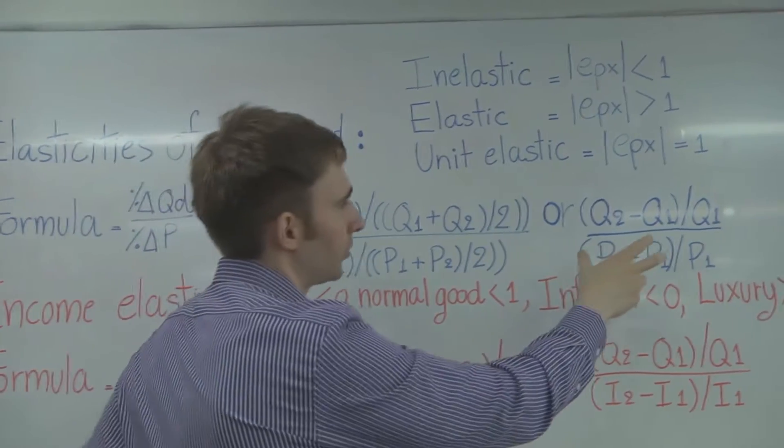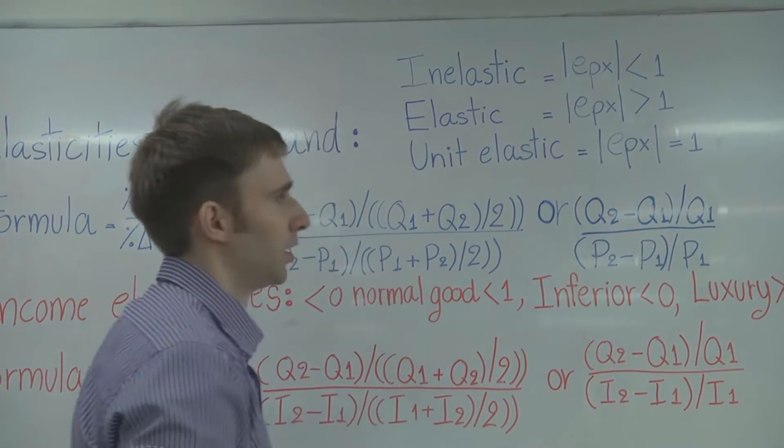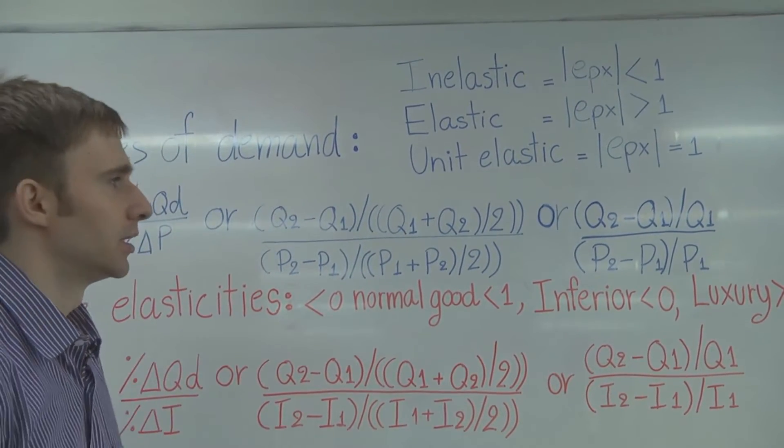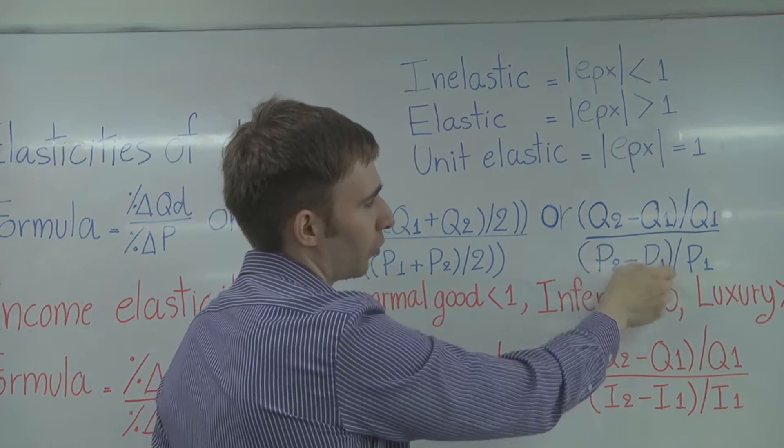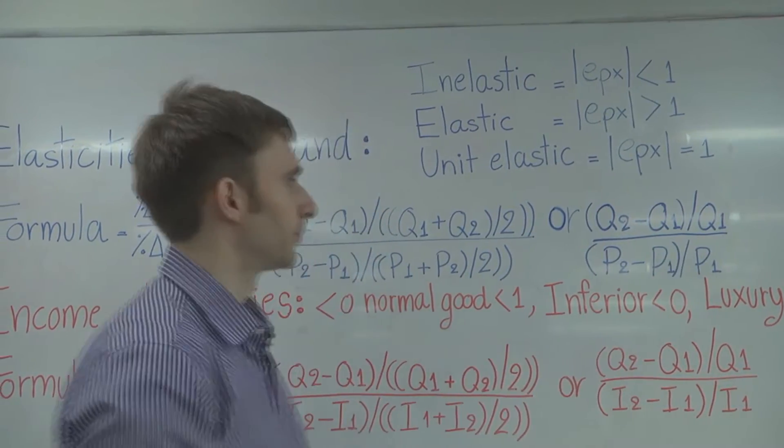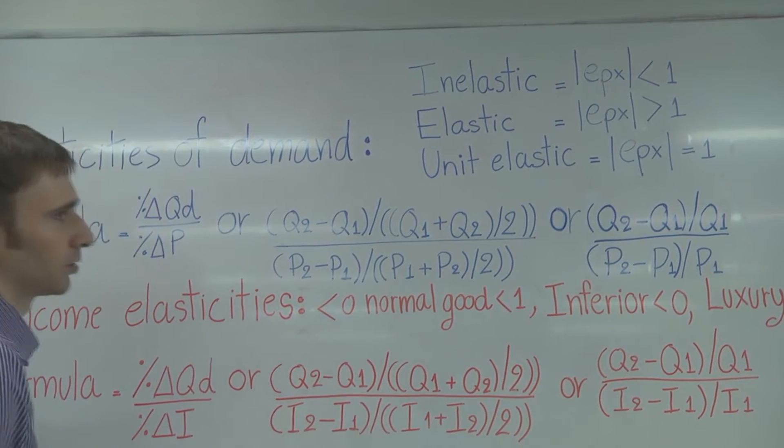The other method in the textbook is Q2 minus Q1 divided by Q1. So it's not averaging anymore. Divided by the new price minus the old price, divided by the old price. So this is popular in a lot of textbooks also.